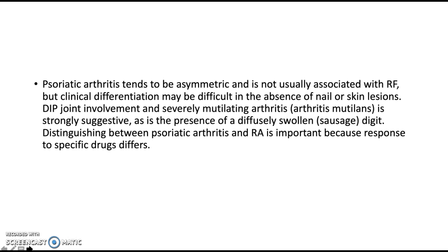Psoriatic arthritis tends to be asymmetric and is not usually associated with rheumatoid factor, though clinical differentiation may be difficult in the absence of nail or skin lesions. Distal interphalangeal joint involvement and severely mutilating arthritis are strongly suggestive, as is the presence of a diffusely swollen sausage-like digit. Distinguishing psoriatic arthritis from rheumatoid arthritis is important because response to different drugs differs between these two diseases.